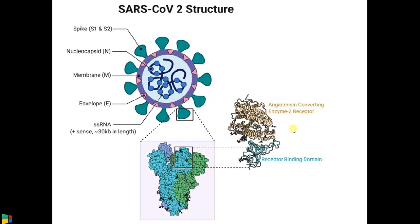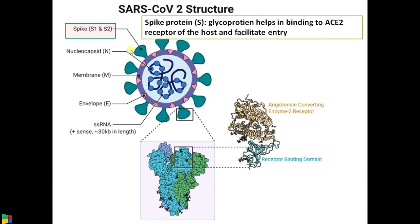Moving into the structure of SARS-CoV-2 — this is an enveloped virus. The first part is the spike. Spike protein is a glycoprotein, meaning a protein with some carbohydrate, that helps the binding of this virus to the host cell surface — specifically to a receptor called ACE2, angiotensin converting enzyme 2. It also facilitates entry. On binding to this receptor, a conformational change occurs allowing the virus to enter the cell by endocytosis. This spike has higher affinity to ACE2 compared to previous MERS and SARS-CoV-1, which may explain its vast global spread.